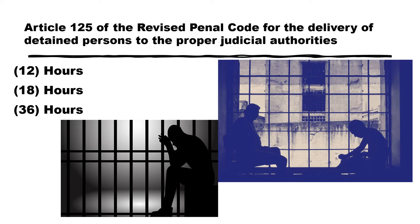It must be noted that the detention of the suspect or arrest may not exceed the periods provided in Article 125 of the Revised Penal Code for the delivery of the detained person to the proper judicial authorities. Specifically, the law requires delivery within 12 hours for crimes punishable by light penalties, 18 hours for crimes punishable by correctional penalties, and 36 hours for crimes punishable by afflictive or capital penalties.